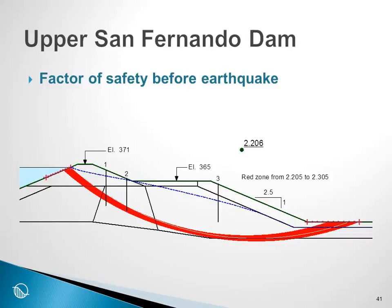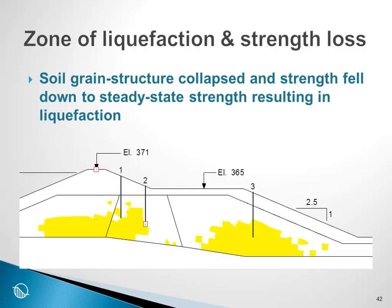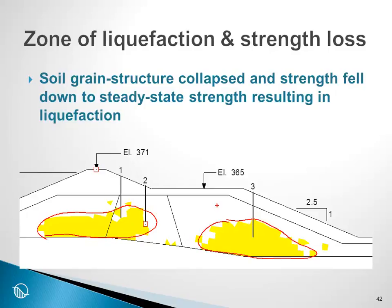Here are the results. Before the earthquake, under static conditions, the margin of safety against sliding was very high — well over 2 — the same as the Lower San Fernando Dam. After the QUAKE analysis, we see that there was soil grain structural collapse and strength fell down to the steady-state strength, resulting in liquefaction. The analysis indicates that there were potentially two zones of liquefaction, which is consistent with the publications on this case history.